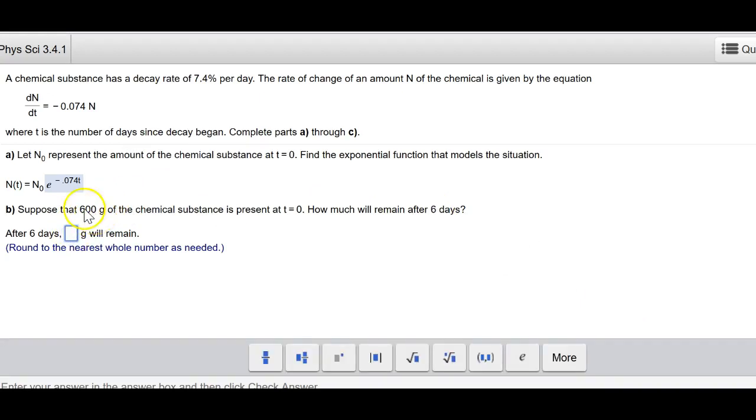So 600 grams is n naught, and t equaling 6. So if I plug that in my calculator, and it says round to the nearest whole number as needed.